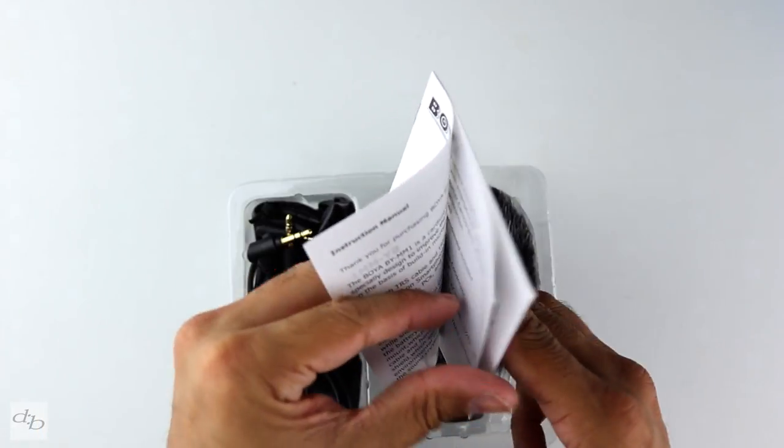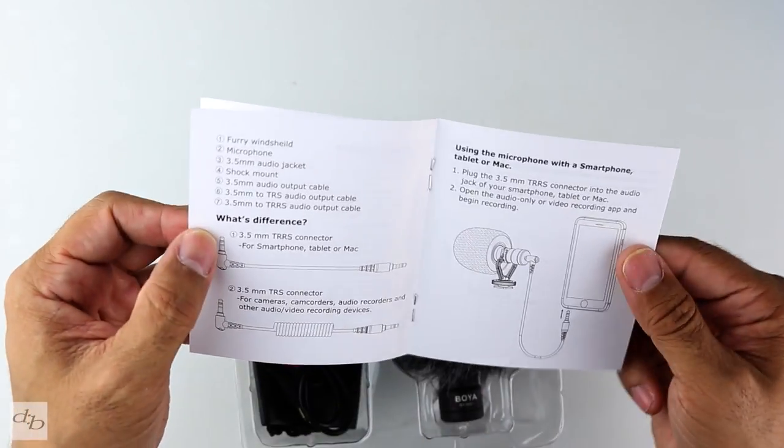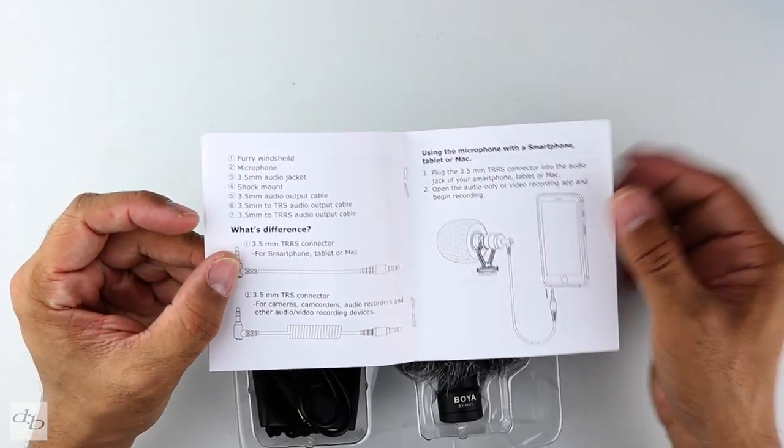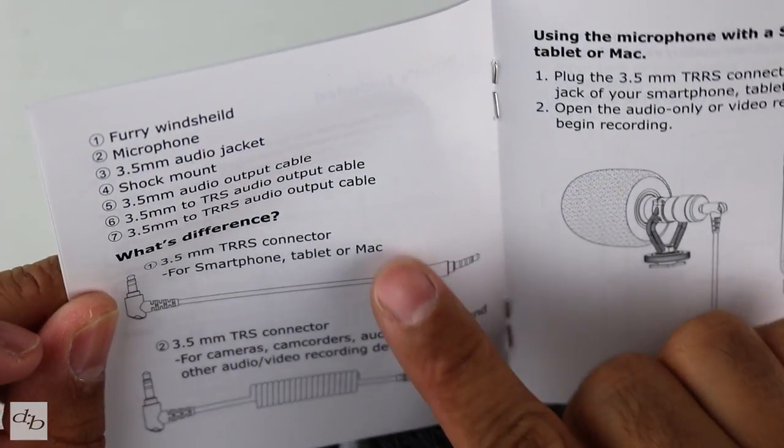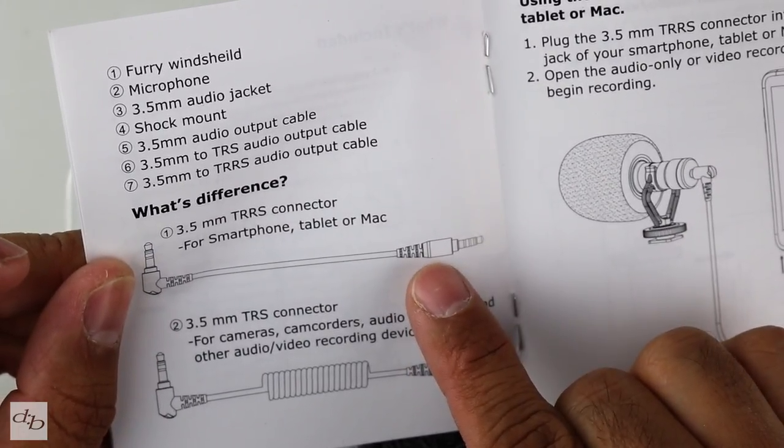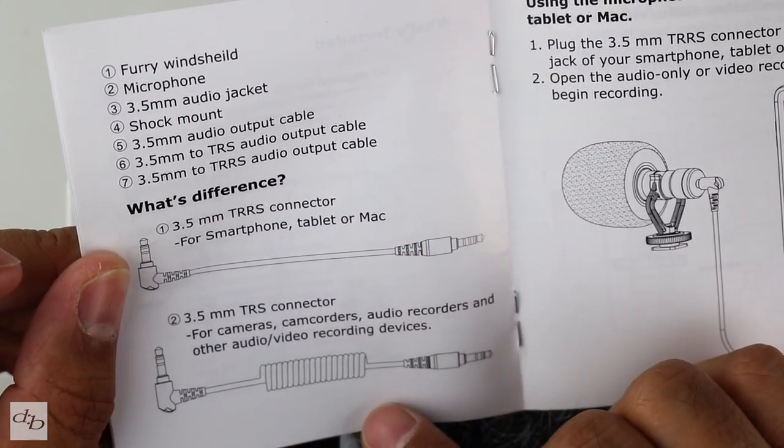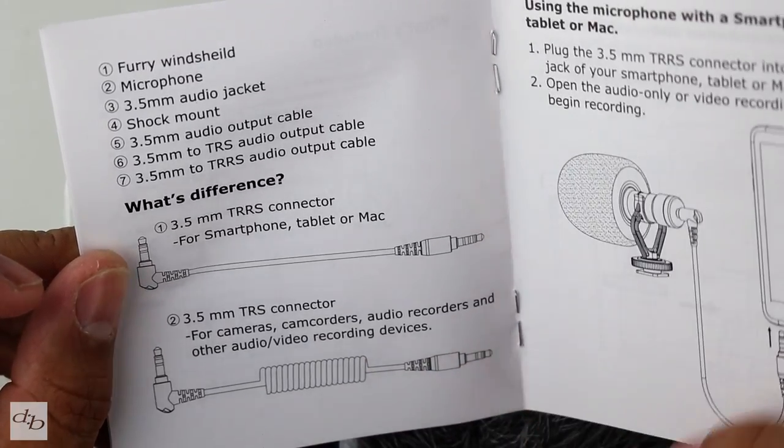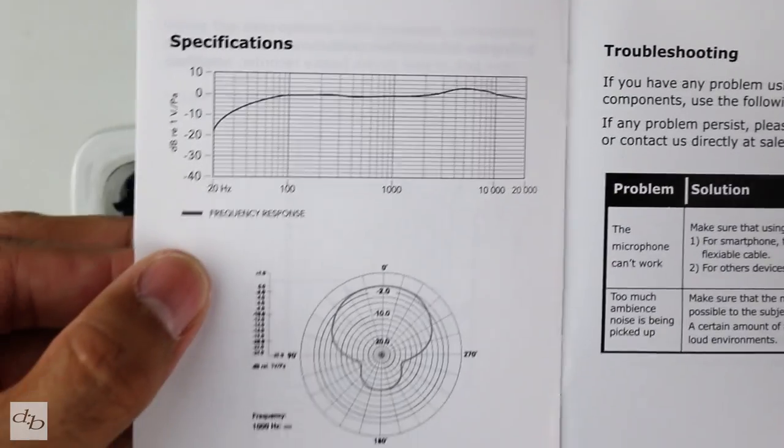Instructions explaining what's what. Don't pay too much attention to these things, but notice it explains which cable you need for which application. You've got the TRS for smartphone, tablet, or Mac, and the TRS for cameras, camcorders, audio recorders, and other devices. Very handy. There's the spec if you really need to look at that.